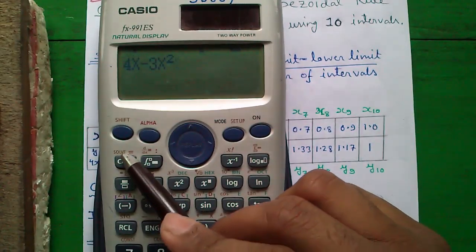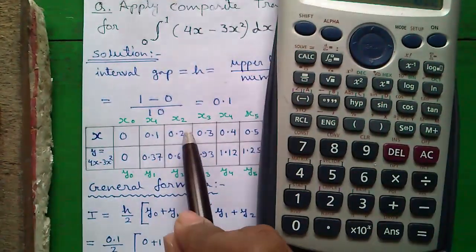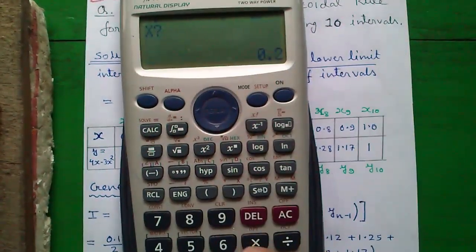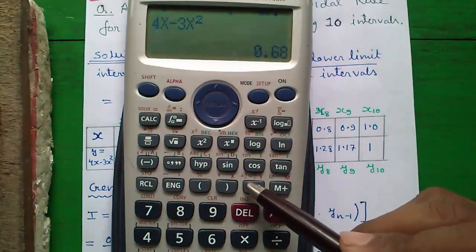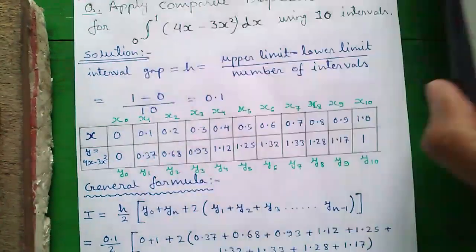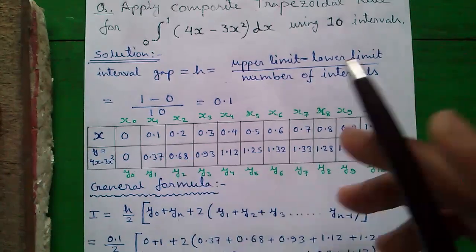And press the calc button. It will ask you for the value of x, so let x equals to 0.2 and press equals to. To get in decimal form, press the h to d button, that is 0.68. So, for x equals to 0.2, y becomes 0.68.